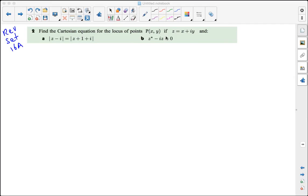In this question 2 of the review set of 16a, we are finding the locus of points P(x,y) for a complex number. Now the locus of points just means there is a collection of points P, and a collection of points generally is a line or a curve. So we are after the equation of a line or a curve.